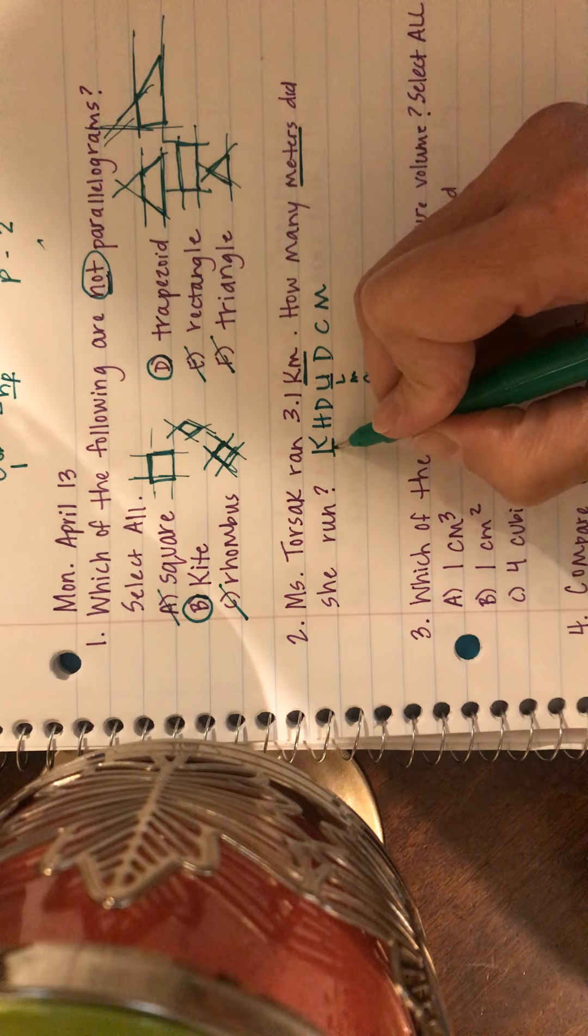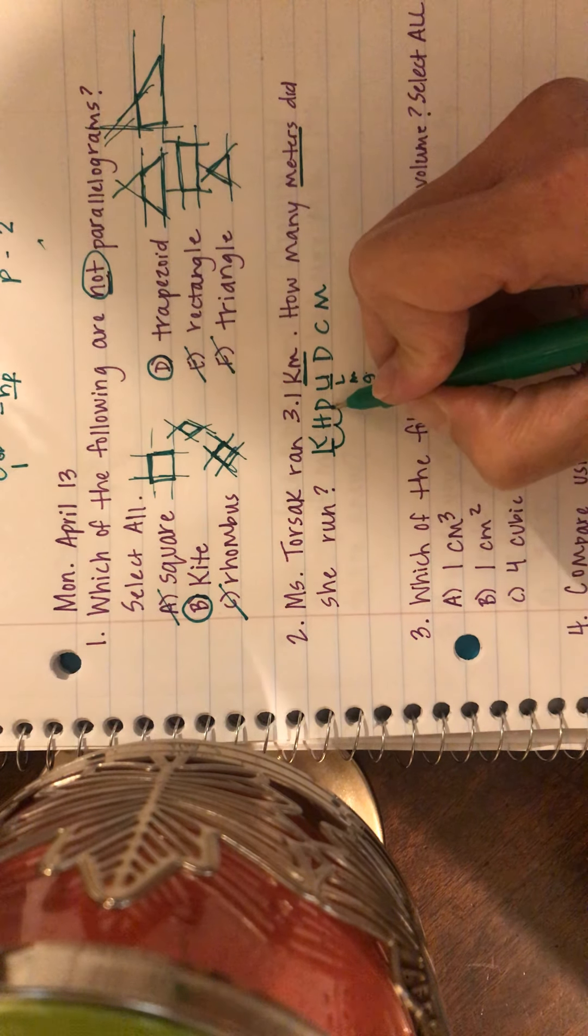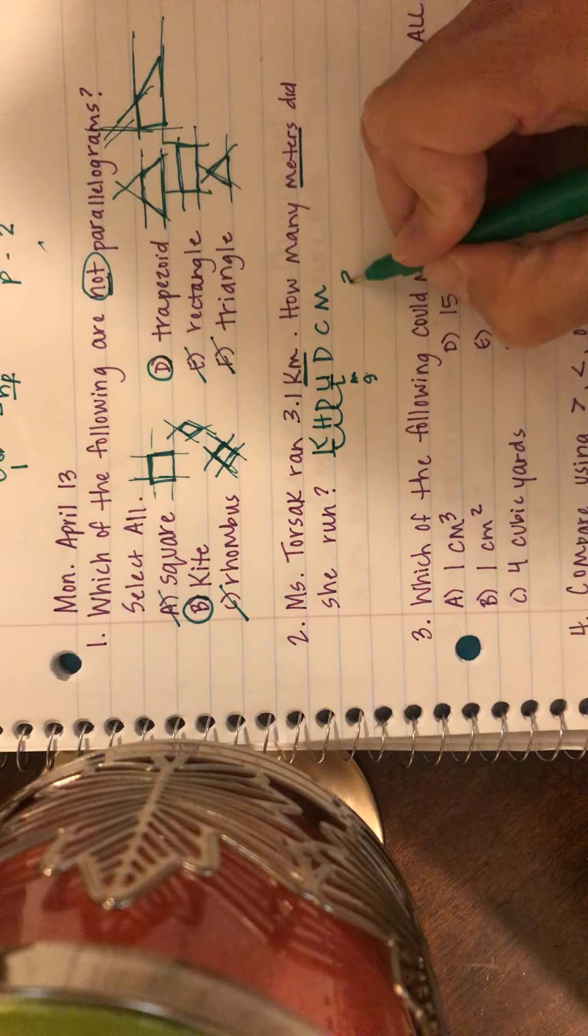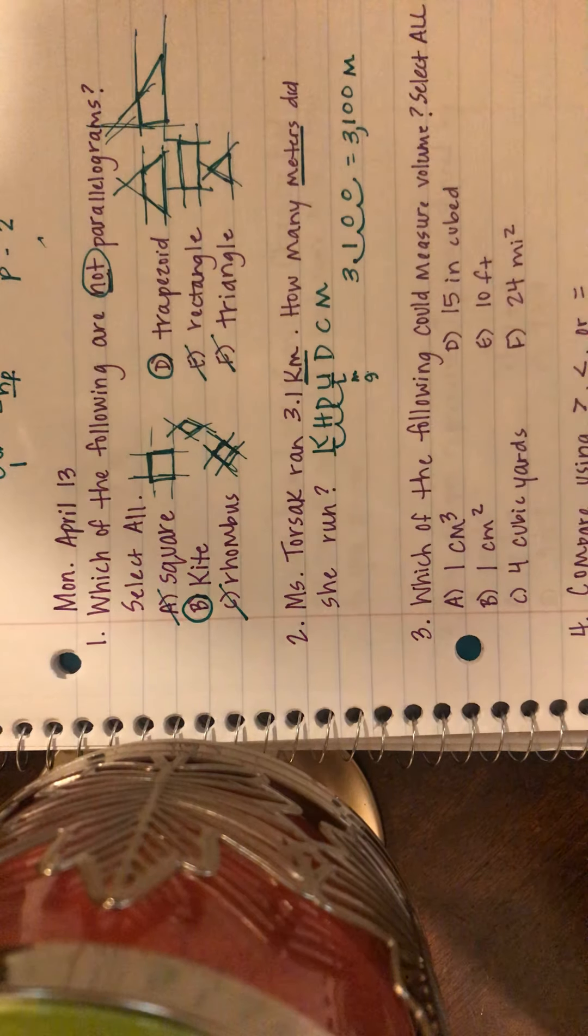So I'm going to take my three and one-tenth and I'm going to make one, two, three moves. I'm going to fill in those blank places with zeros. So three and one-tenth kilometers is the same as 3,100 meters.